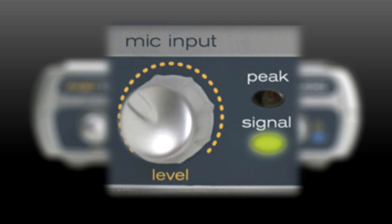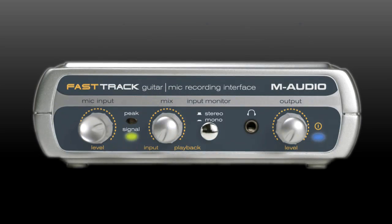You want to turn up the level so that the green signal LED responds when you sing into the mic. If the red peak LED lights up when singing, turn the level down. These LEDs are only connected to the XLR mic input. They will not respond to a guitar connected to the ¼-inch input.